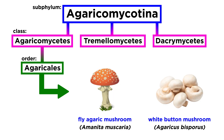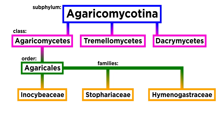In the order Agaricales, most of the gilled mushrooms include species like Amanita muscaria, the fly agaric, and the white button mushroom, Agaricus bisporus. In this tutorial we will be discussing gilled mushrooms from the following families: Inocybaceae, Strophariaceae, and Hymenogastraceae.